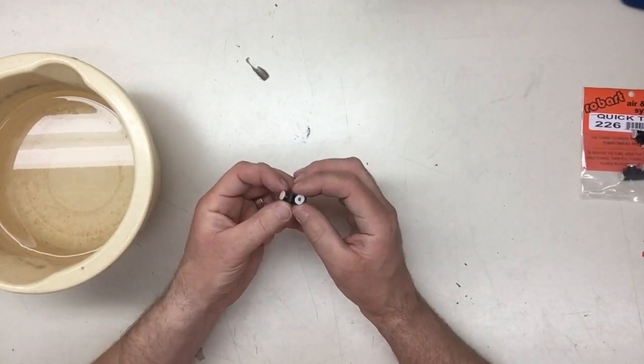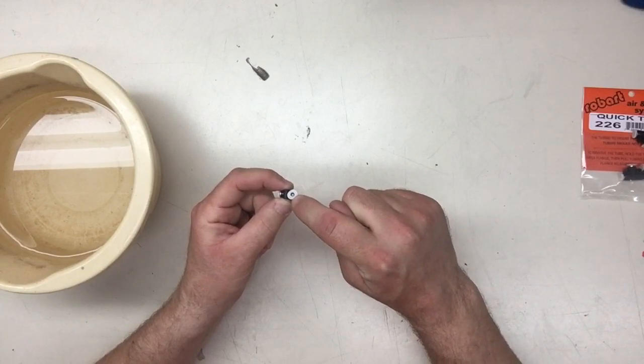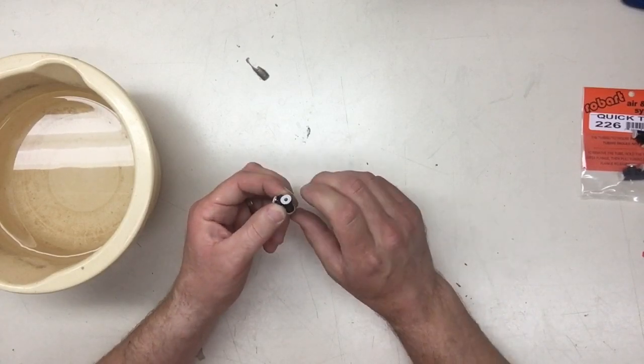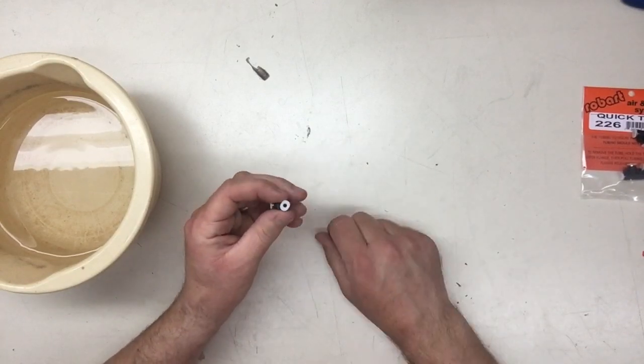Really simple to use. You will simply press the airline into the hole, and then to release it, just light squeeze on that, and then pull the airline out.